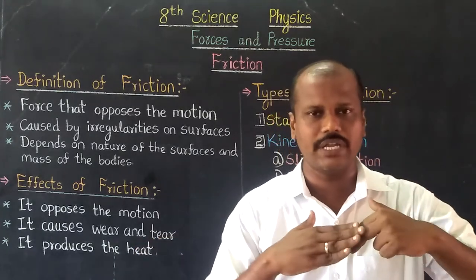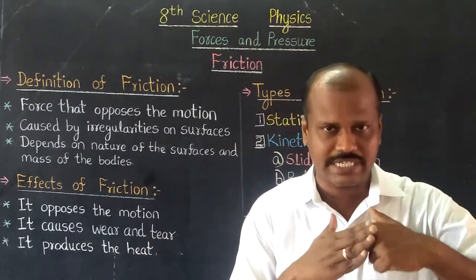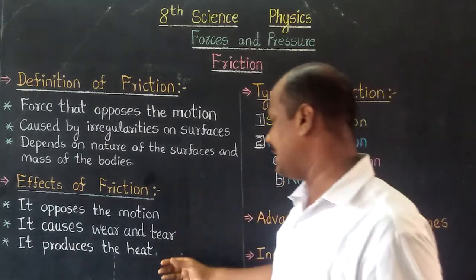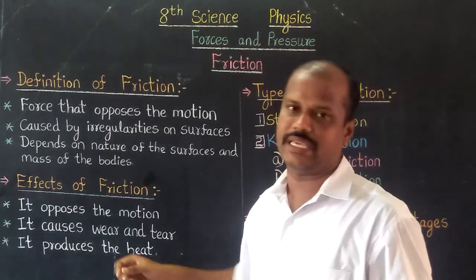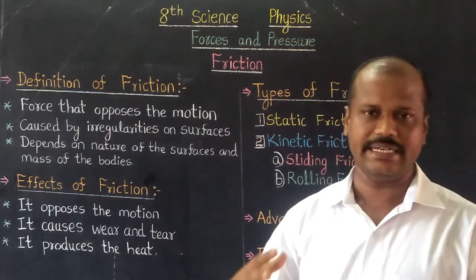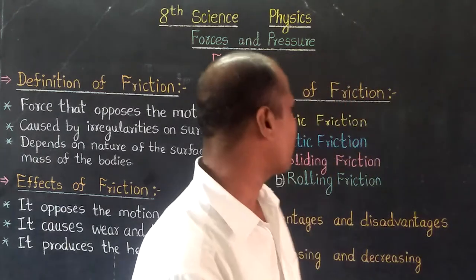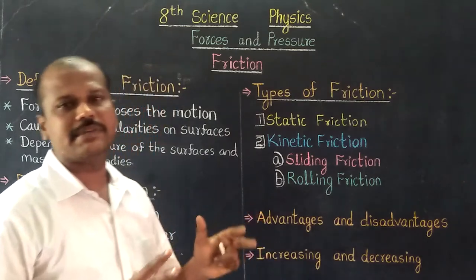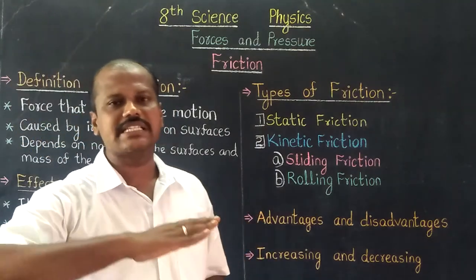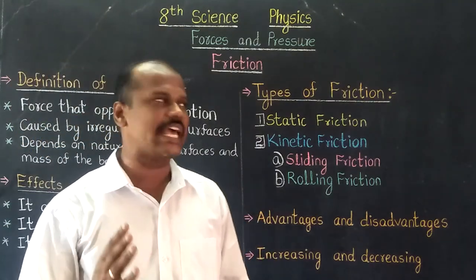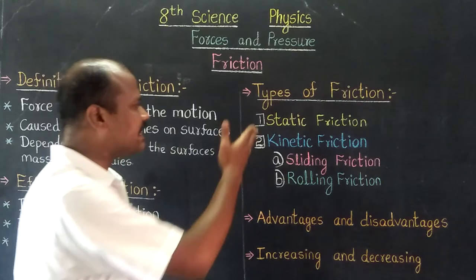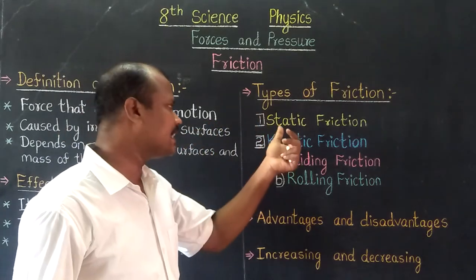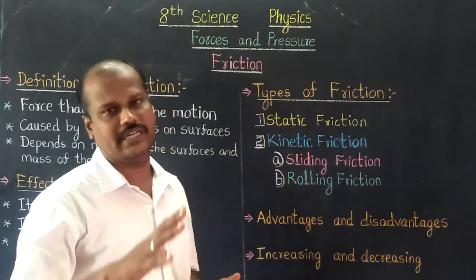Then it produces heat, and it continues friction on the surface. It will produce the same type of effects. So friction produces heat. All the two types of friction can be used as static friction and kinetic friction.